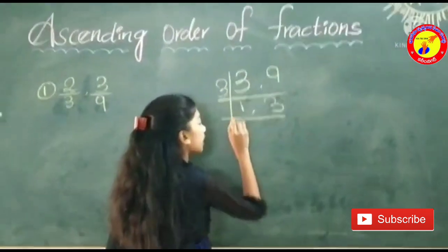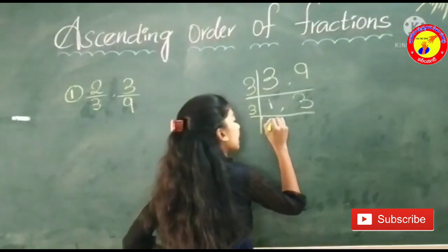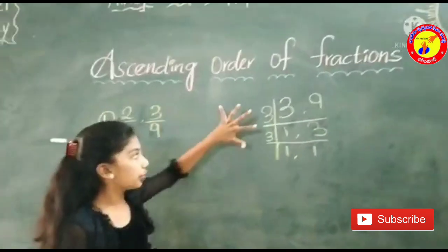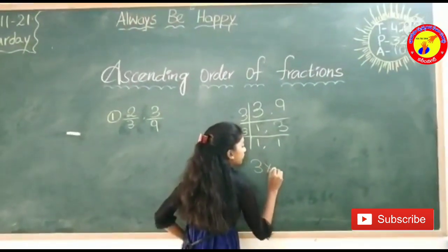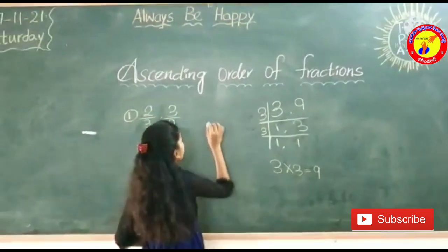Again we should take 3 tables. In 3 tables, 1 is not there. So we should write direct 1. And 3 1s are 3. Now we should write these 2 numbers. 3 into 3. 3 times 3 is 9. 9 is the LCM.